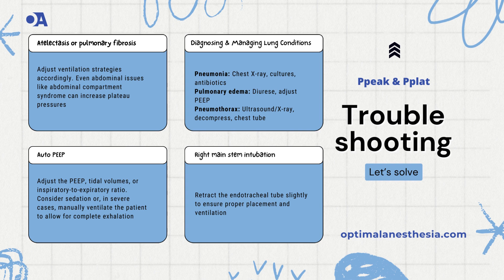Pneumothorax is another serious cause: air trapped outside the lung compresses it, leading to high pressures and potentially life-threatening situations. Evaluate with ultrasound or a chest x-ray; if confirmed, decompress the lung and place a chest tube to release the trapped air. Atelectasis or pulmonary fibrosis can also elevate pressures, making parts of the lung collapse or become stiff and fibrotic, respectively. Adjust your ventilation strategies to open collapsed areas and manage fibrosis. Also keep in mind that abdominal issues like abdominal compartment syndrome can push up on the diaphragm, increasing plateau pressures — managing intra-abdominal pressure can help alleviate this. When you see both high peak and plateau pressures, think lung compliance issues.